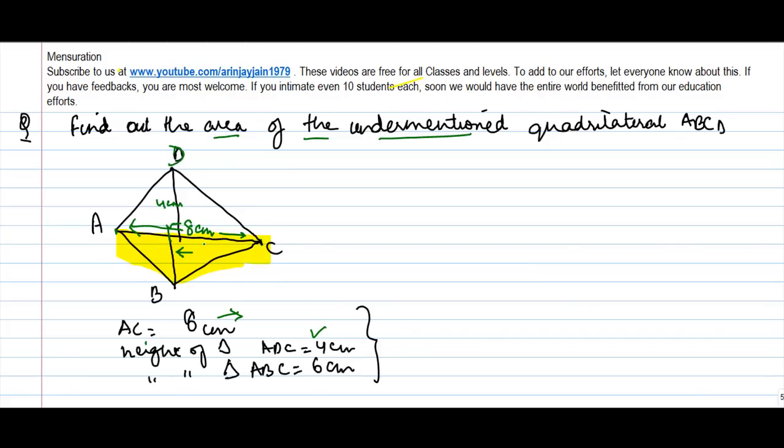Now we know that area of a quadrilateral is equal to one half into d, where d stands for the diagonal, into h1 plus h2, where h1 and h2 represent the heights of the triangles which are formed by this diagonal.